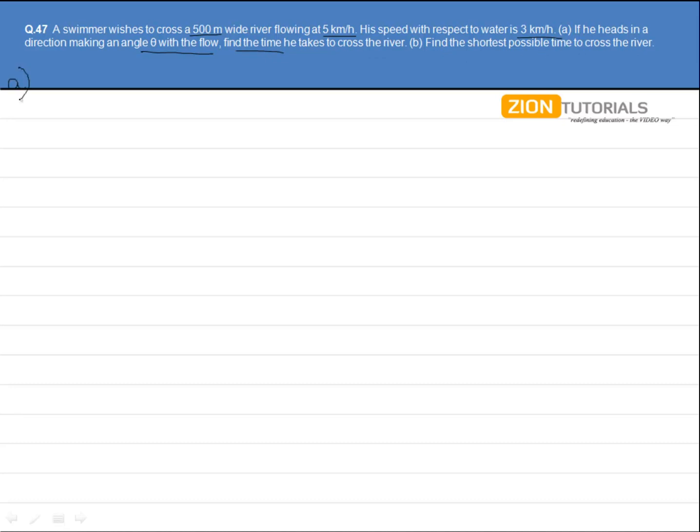Let us deal with the first part of this question. If we draw the diagram for this problem, we are having the river flowing at 5 kilometers per hour. The person heading at an angle theta with the 3 kilometers per hour velocity with respect to the river.